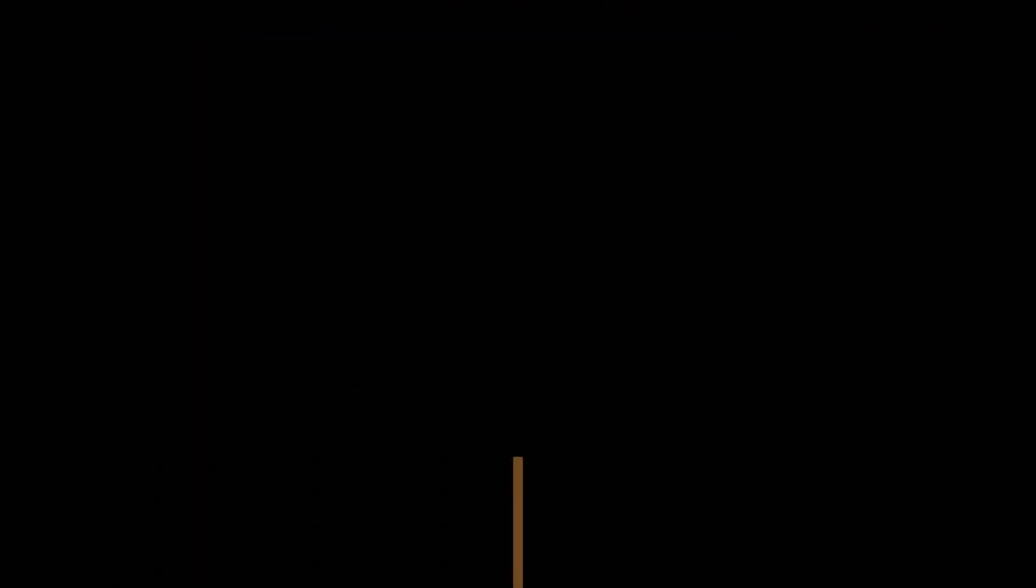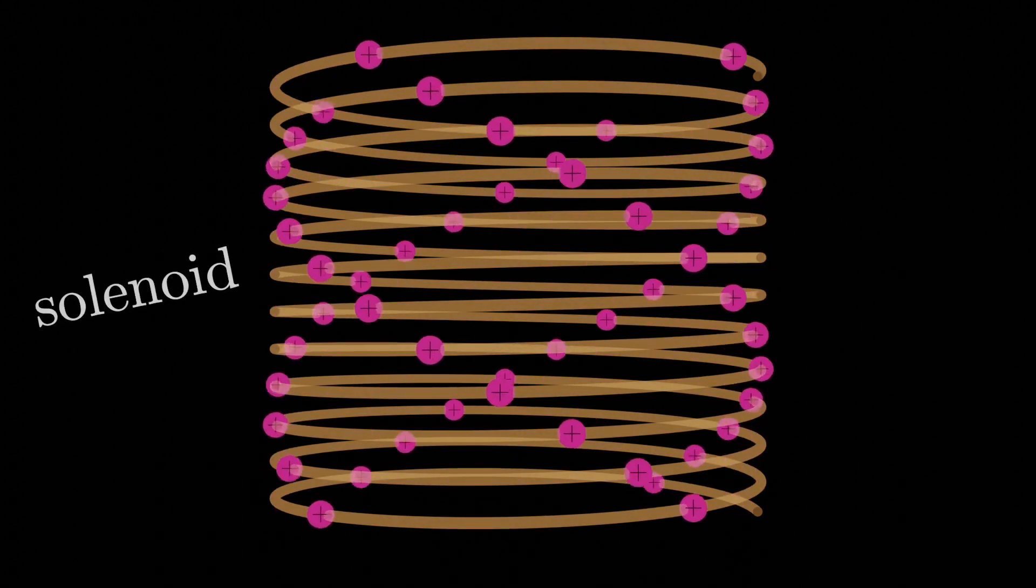If you take a long wire and just wrap it around over and over and over again, sometimes making hundreds of these turns, you end up with what we see here, a coil of wire that forms multiple loops. This is what's called a solenoid. It's a wire of current that's been wrapped around into a bunch of loops.